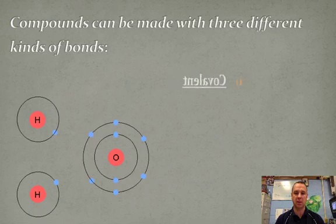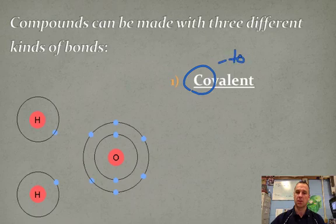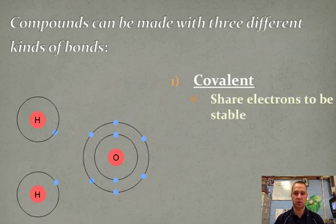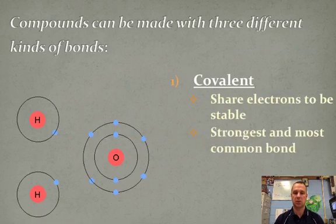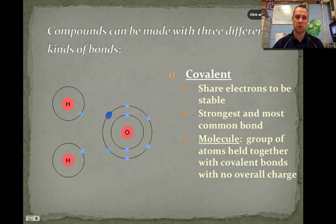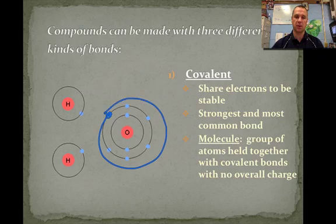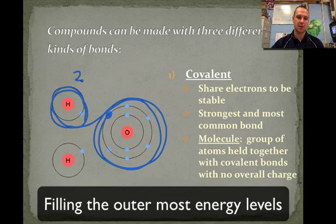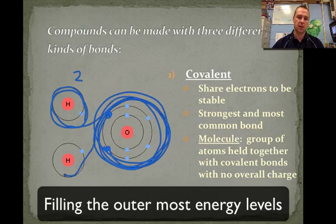The first one is a covalent bond. Any time you see CO, think together. So covalent bond actually means a sharing of electrons to become stable. If you look over here to the left-hand side, hydrogen has one electron, but it wants to have two. So what it will do is oxygen will give it an electron. That electron will float around oxygen, but it will also float around hydrogen. And hydrogen thinks it has two.